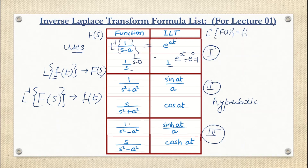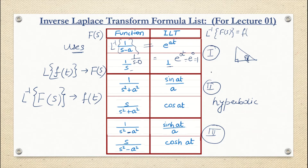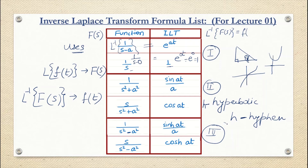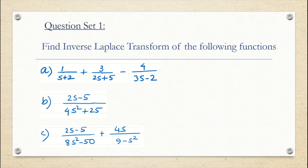Trigonometric functions like sine and cosine come from the right-angle triangle ratios. Hyperbolic functions are defined using distances related to a hyperbola. In this course we don't need to go into those details. To memorize: h stands for hyperbolic. Now let's start the questions.